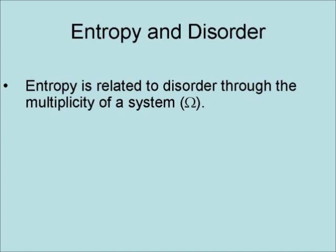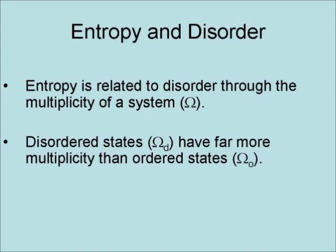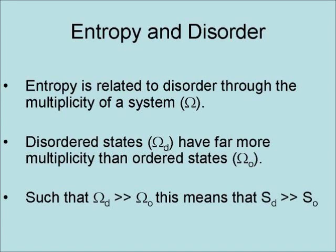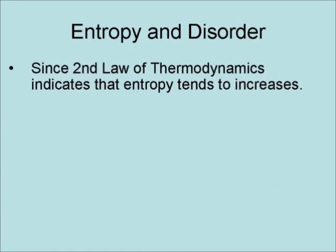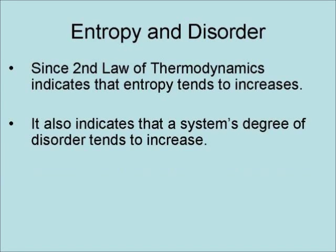Entropy is related to disorder through the multiplicity of a system. Disordered states have far more multiplicity than ordered states, such that omega_d is much, much greater than omega_O. This means that entropy_d is much, much greater than entropy_O. Since the second law of thermodynamics indicates that entropy tends to increase, it also indicates that a system's degree of disorder tends to increase.